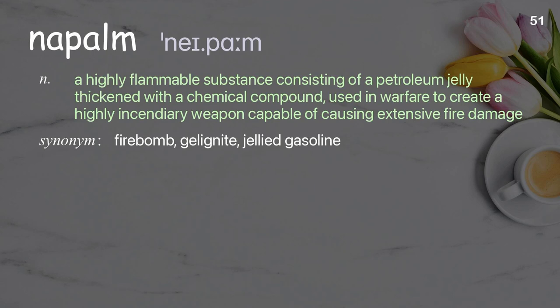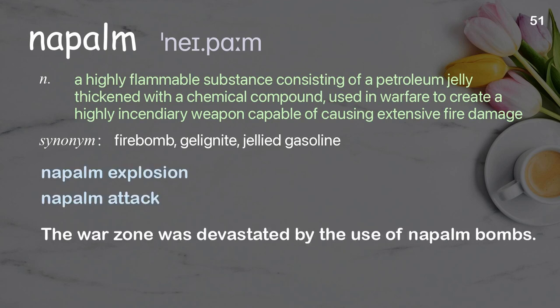Napalm: a highly flammable substance consisting of a petroleum jelly thickened with a chemical compound, used in warfare to create a highly incendiary weapon capable of causing extensive fire damage. Examples: napalm explosion, napalm attack. The war zone was devastated by the use of napalm bombs.